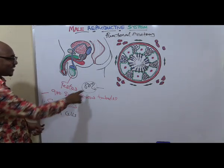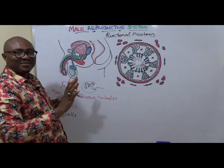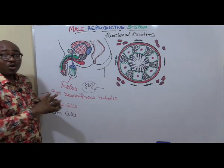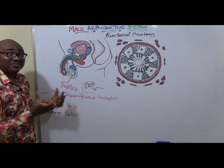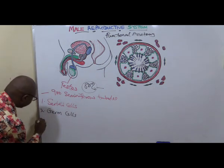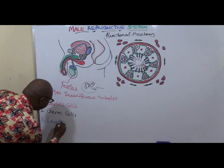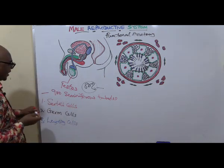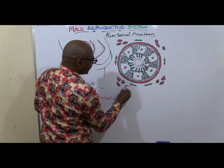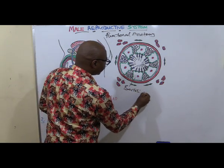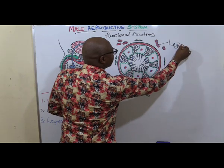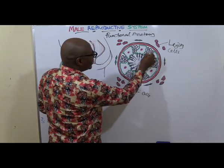We said 80 percent is made up of seminiferous tubules. The remaining 20 percent is made up of a third cell type, known as the Leydig cells. So we have the Sertoli cells, the Leydig cells, and the germ cells.